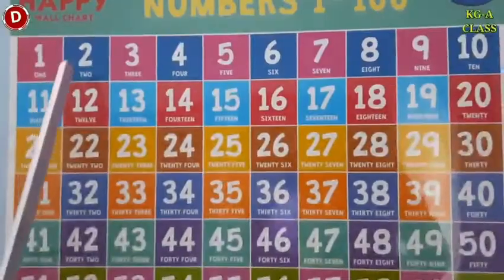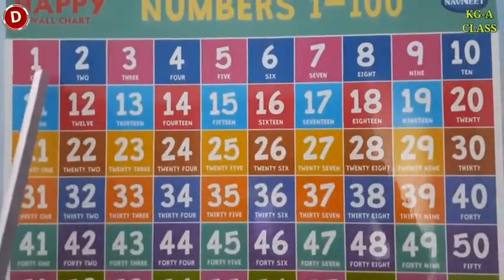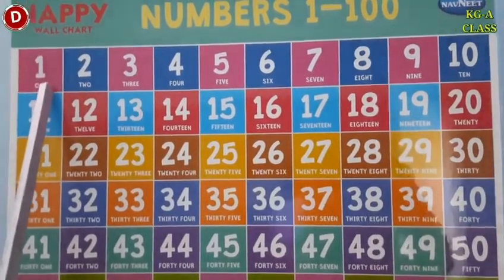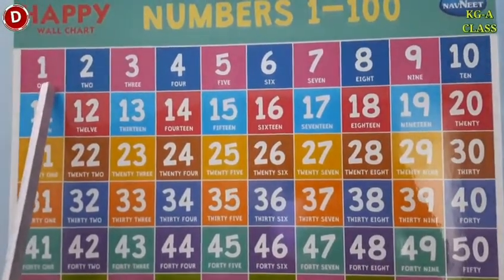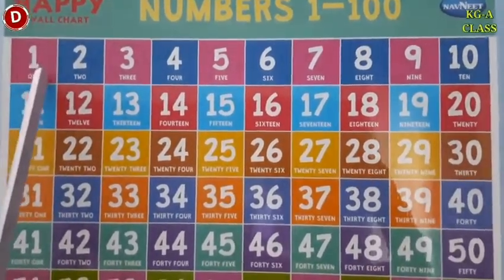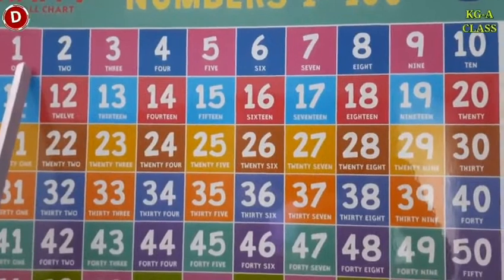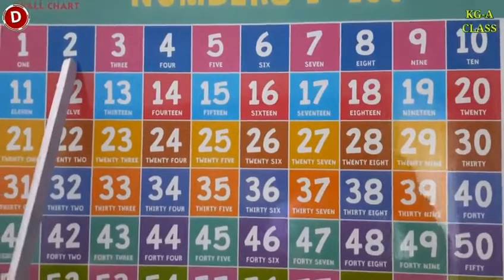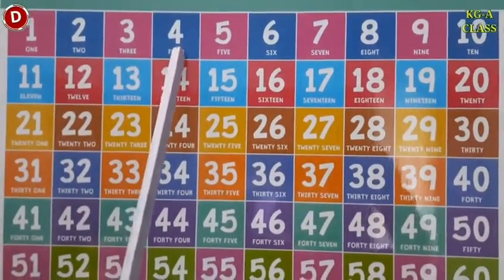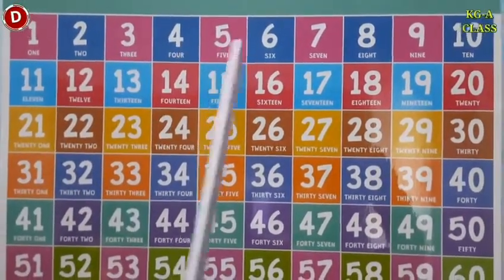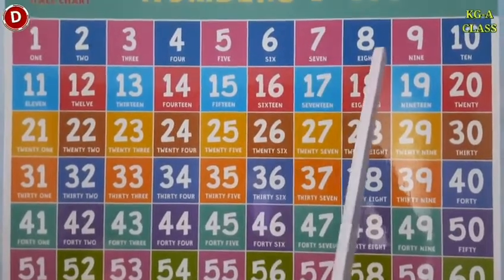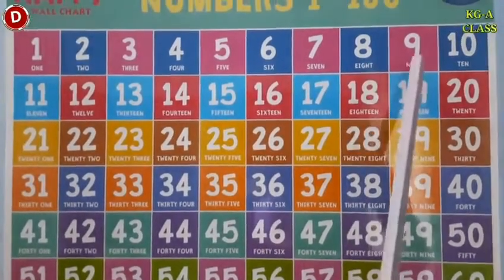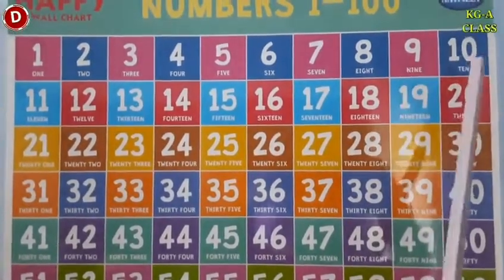Now let's learn number counting 1 to 50 with the help of this chart. You have to say after me. This is number 1, 2, 3, 4, 5, 6, 7, 8, 9, 10.